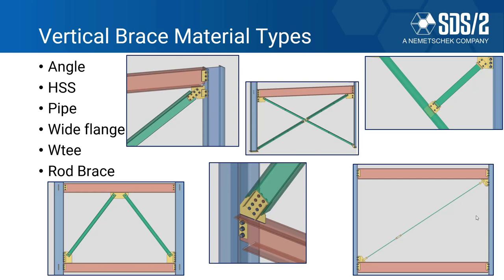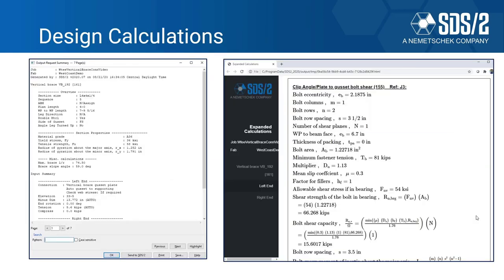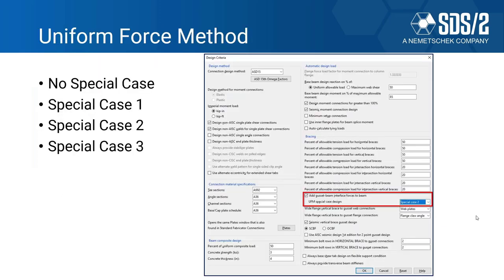Every time that SDS 2 frames a connection it will provide your design calculations and expanded calculations. The design calculations show all the calculations, and the expanded calculations are the longhand form showing all the formulas the software used to make that connection pass. Every time something is modified it will also refire those expanded calculations every single time.